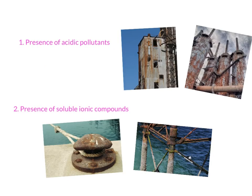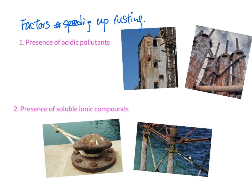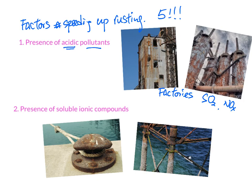Next, we look at factors that speed up rusting — there are five in total. The first is the presence of acidic pollutants. Factories emit oxidizing gases such as SO2 and NOx, which mix with water to form acid rain. These acidic/oxidant environments speed up rusting, causing more rust to form.